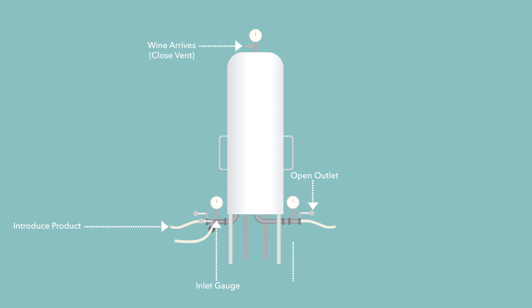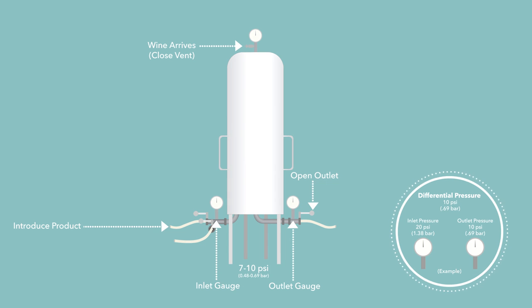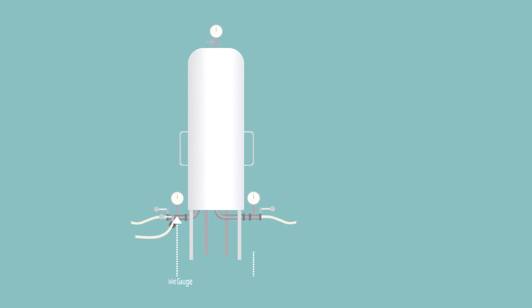Initial differential pressure is likely to be from 7 to 10 psi as calculated by the inlet gauge less the outlet gauge. As the filtration progresses, pressure will increase as solids are retained by the cartridge.